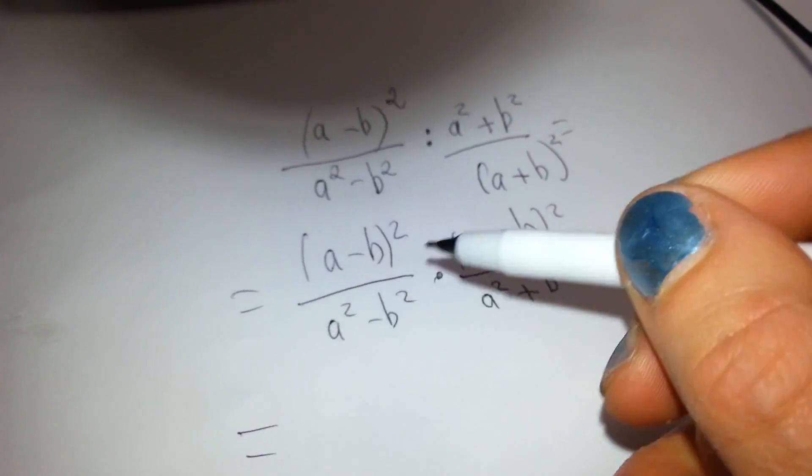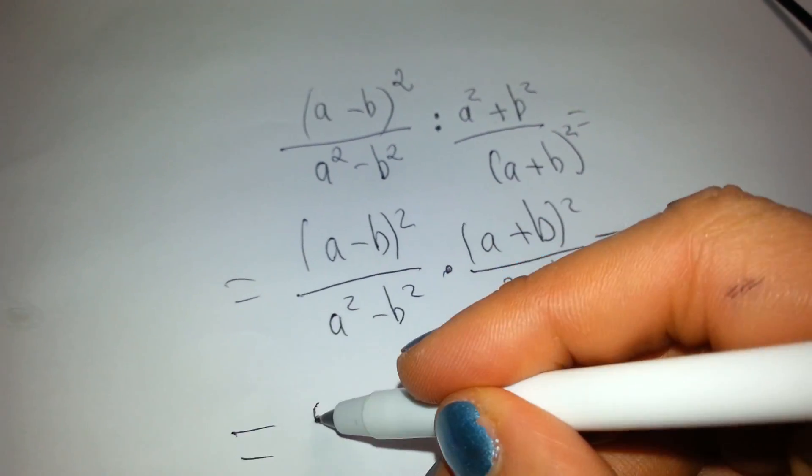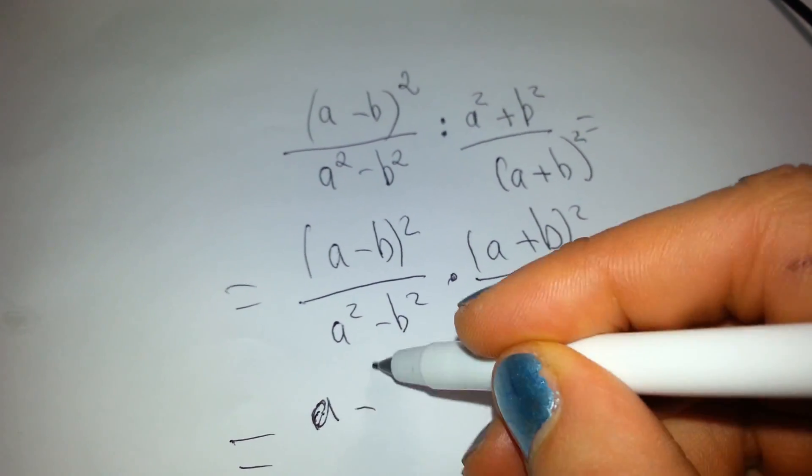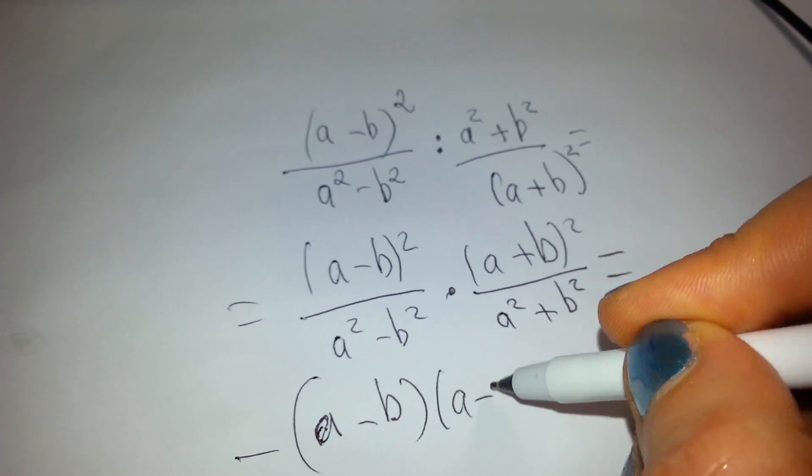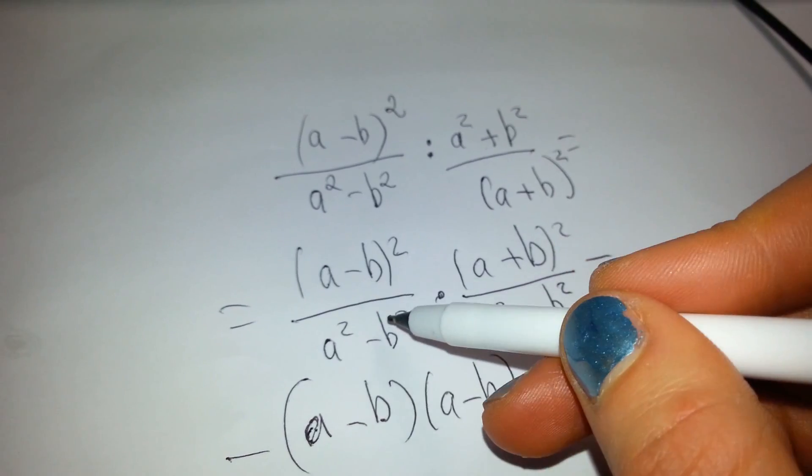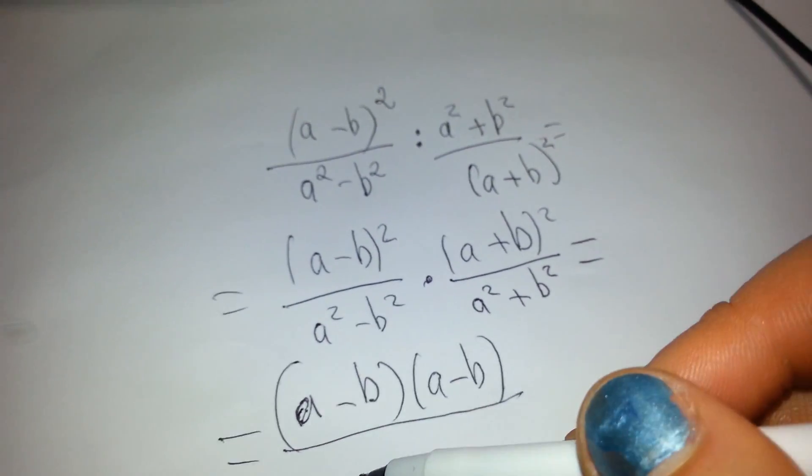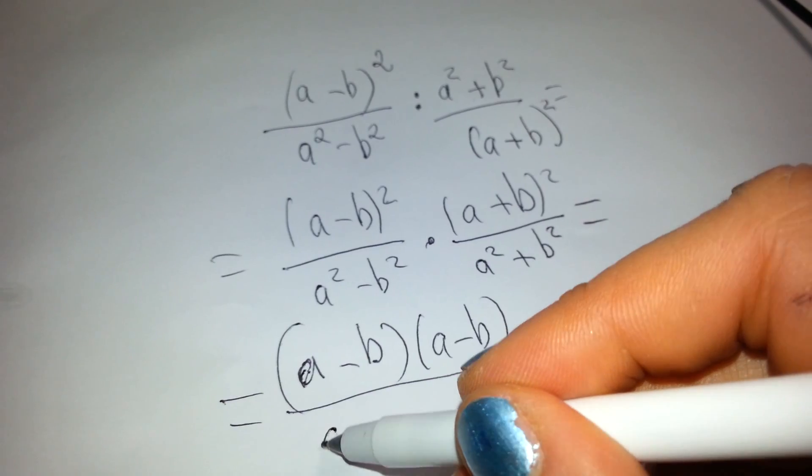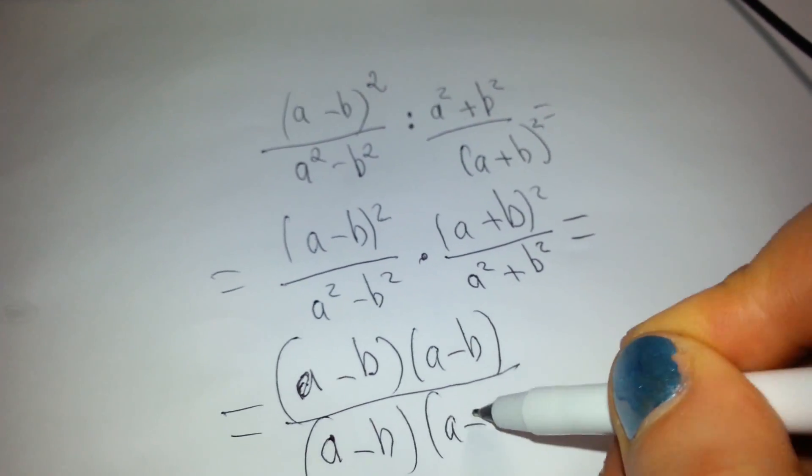Now what we're going to do, we're going to apply formula where we can. Now we know this, there's no formula. We have a minus b multiplied two times, a minus b, because this is square. Now, this is not the same. This is not like the square. So what we have here is, we've got a formula, a minus b, a plus b.